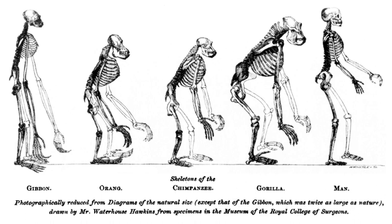The subject was raised at the 1860 British Association's Oxford meeting, when Huxley flatly contradicted Owen and promised a later demonstration of the facts. 'I redeemed that pledge by publishing, in the January number of the Natural History Review for 1861, an article wherein the truth of the three following propositions was fully demonstrated: 1. That the third lobe is neither peculiar to, nor characteristic of, man; 2. That the posterior cornu of the lateral ventricle is neither peculiar to, nor characteristic of, man; 3. That the hippocampus minor is neither peculiar to, nor characteristic of, man, as it is found in certain of the higher quadrumana.'